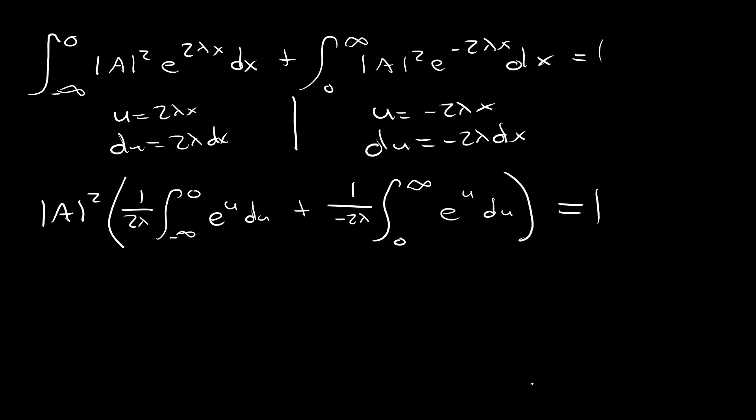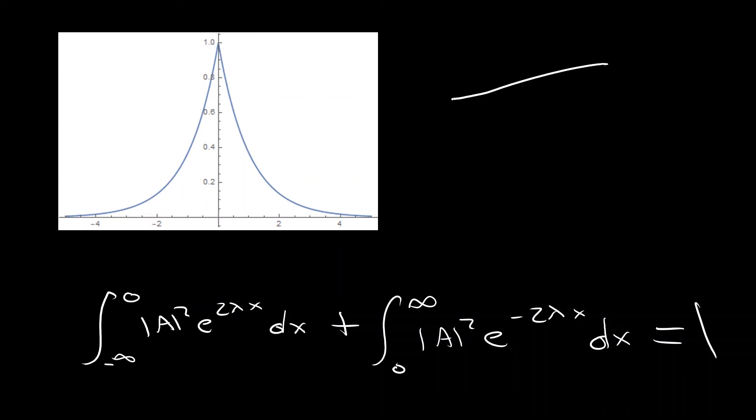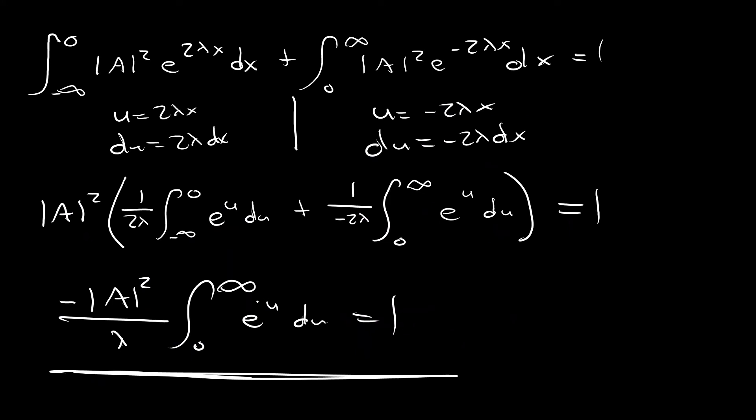But now we can simplify this thing pretty easily because if you notice, we have opposite bounds and we have an extra minus sign being tacked on here. So we can simplify this further down to magnitude of A squared over lambda times the integral 0 to infinity of e to the u du equals 1. And again, this all comes from the geometry we employed right here. We could have just taken one of these integrals, let's say this one, and multiplied by 2 and gotten the same result. But we decided to just add the two together, and lo and behold, we basically just got the same thing, but multiplied by 2.